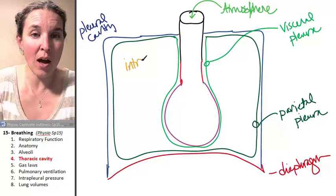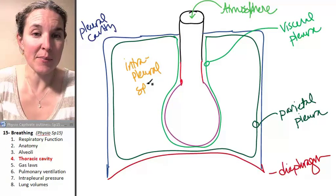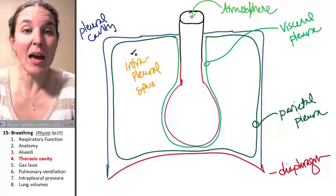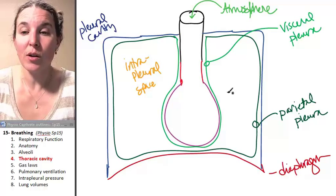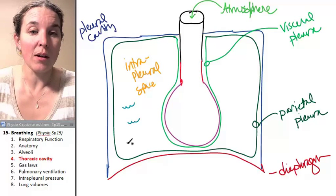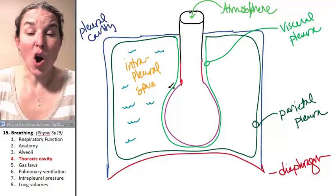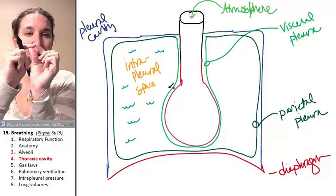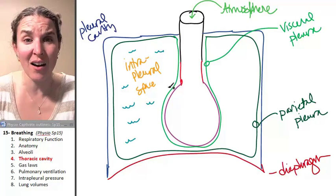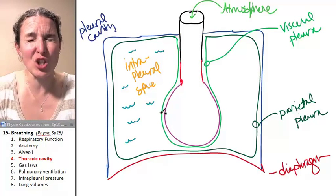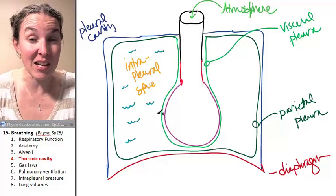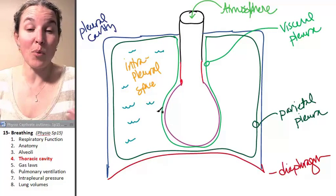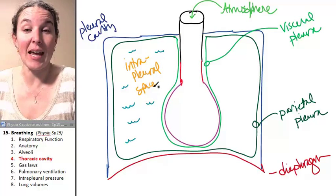This is the intrapleural space. And the visceral pleura and the parietal pleura produce pleural fluid. It's a serous fluid. And this is a crazy thing. All told, you have like 25 milliliters. Here's one milliliter. So you can imagine 25 of those. It's not very much fluid in there. So this space is actually super small. They consider it a potential space.